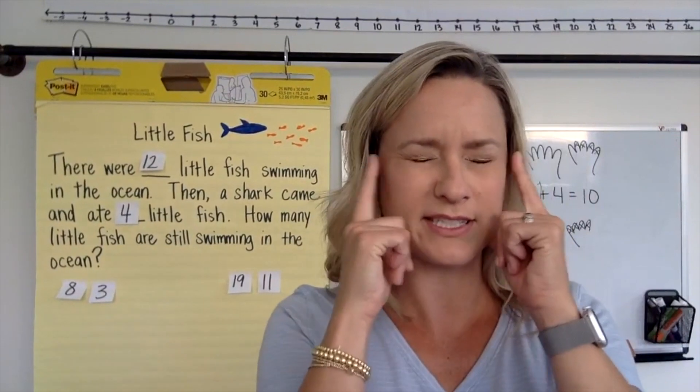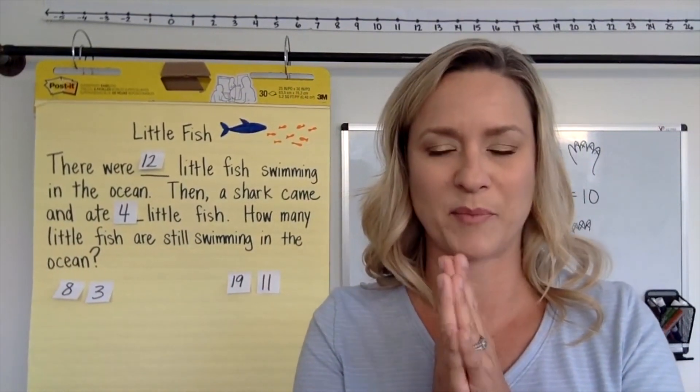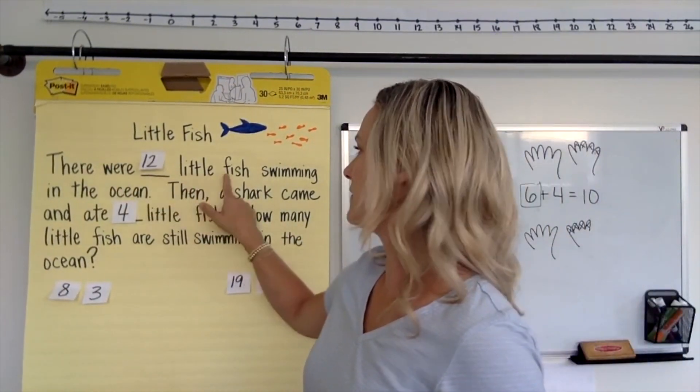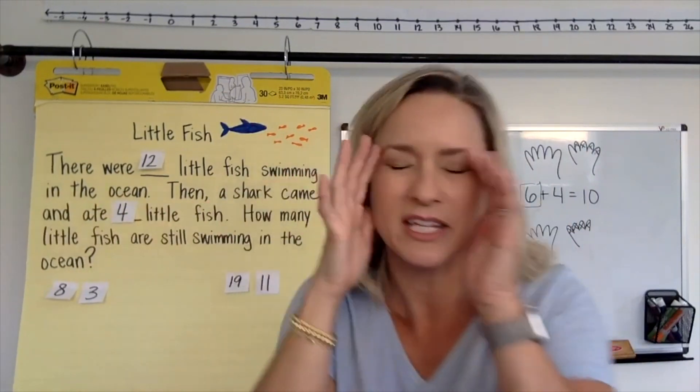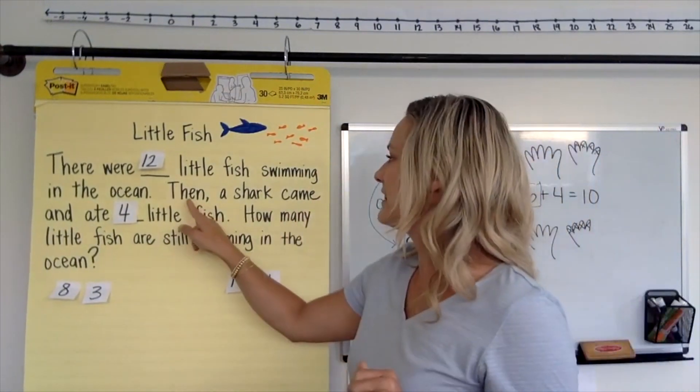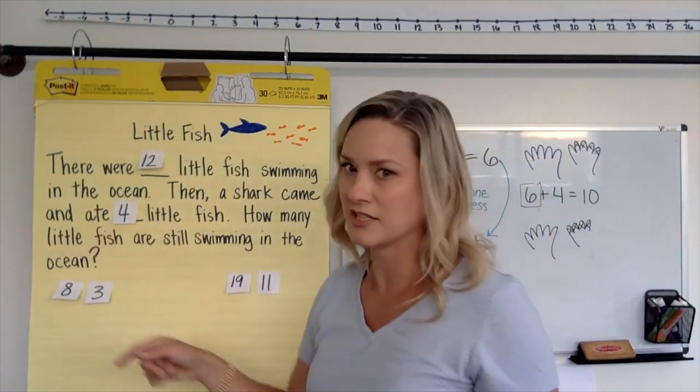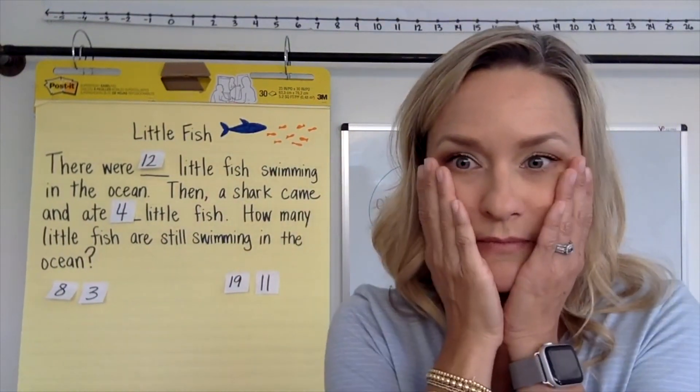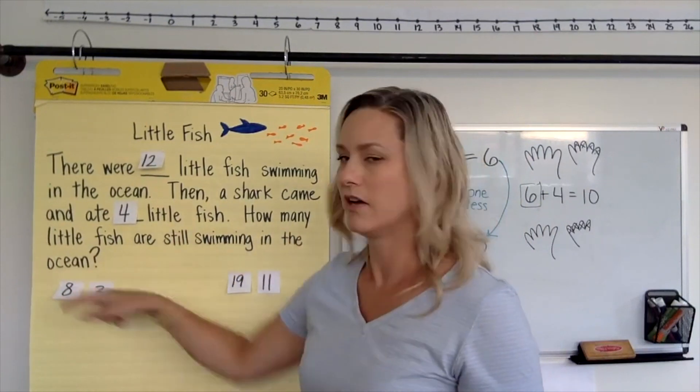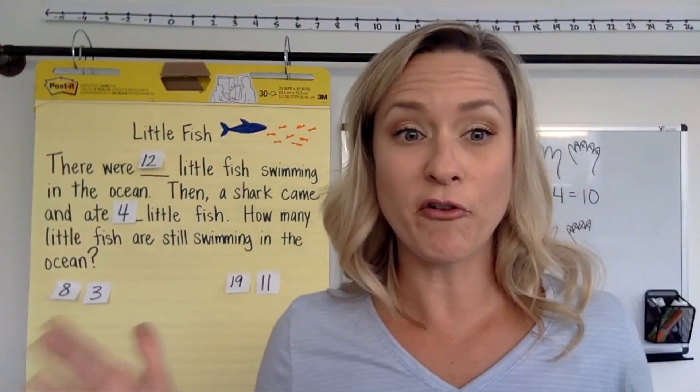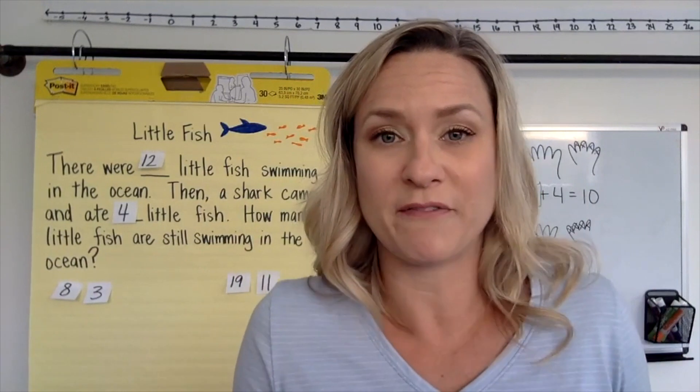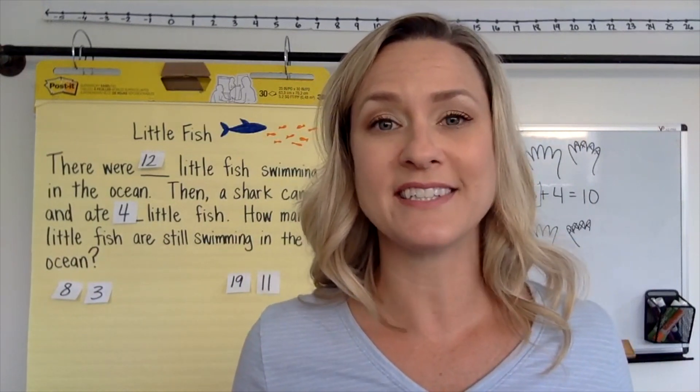I'm going to reread that story to myself because it's so important that we picture the story in our minds. Remember we make a picture in our heads. Okay. So there were 12 little fish swimming in the ocean. Okay. Can you all imagine 12 little fish? Close your eyes. See, count them up. It's a 10 and 2 more. 12 little fish. Then a shark came and ate 4 little fish. Woo! How many little fish are still swimming in the ocean? Okay. So we know for sure we started with 12 little fish and that the shark ate 4 little fish. And we're trying to find out how many little fish are still left in the ocean.